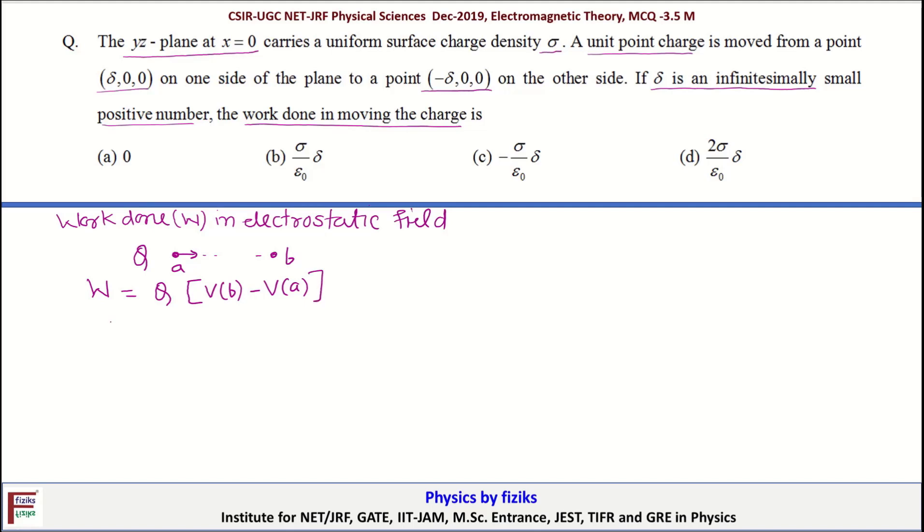In our case, potential just above is exactly same as potential just below. That is some constant value. So work done is zero. So option A is correct.